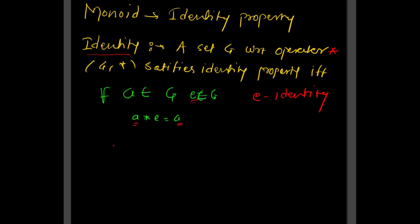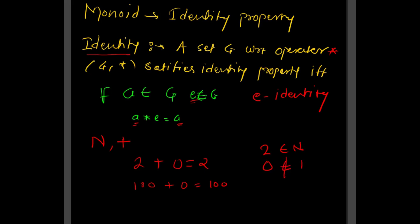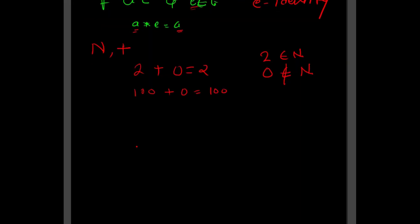Now let us take an example: the set N of natural numbers ranging from 1 to infinity with the operator plus. For plus, let us check: 2 plus which element gives 2? Well, 2 plus 0 gives 2, and 100 plus 0 gives 100. However, 0 doesn't belong to the natural numbers, so the natural numbers with the plus operator do not satisfy the identity property.